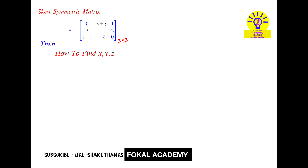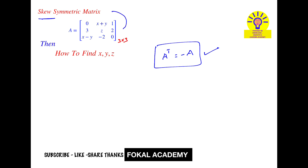Whenever the given matrix satisfies the condition that the transpose of the matrix is equal to minus of that given matrix, then we can say that matrix is a skew symmetric matrix. This is the required condition to say it is a skew symmetric matrix. So this matrix must satisfy this condition.